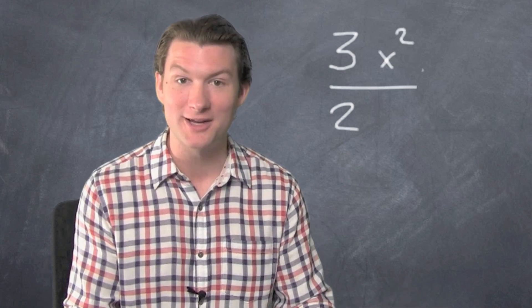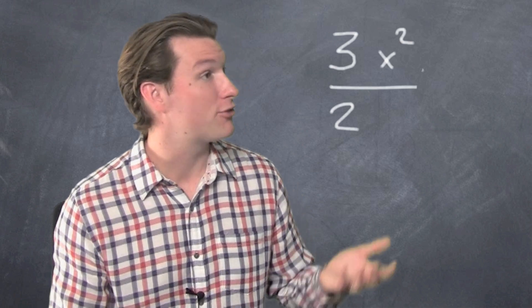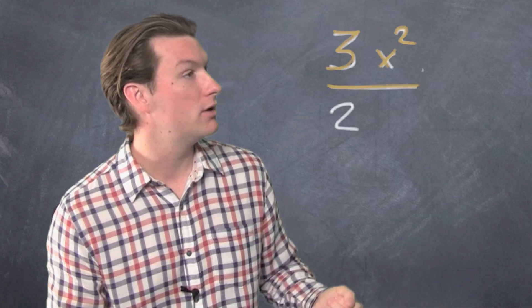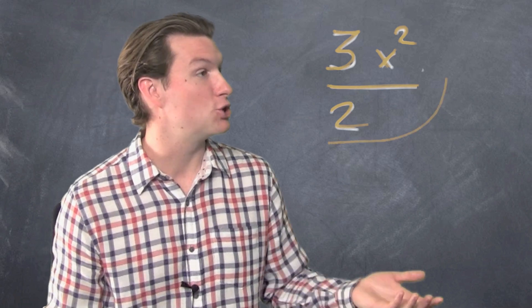So, little numbers are done too. What do we have left over? We've got 3 on top, x squared, over 2. And that's our answer: 3x squared over 2.